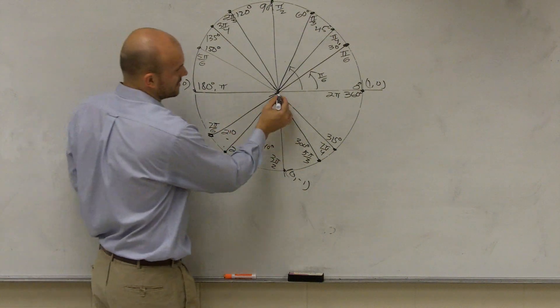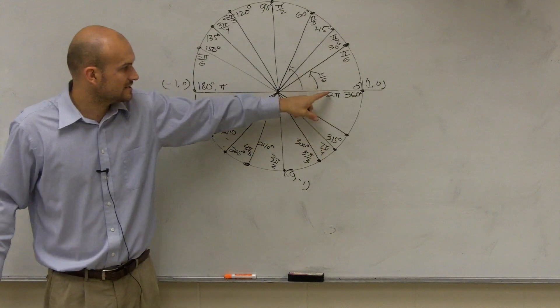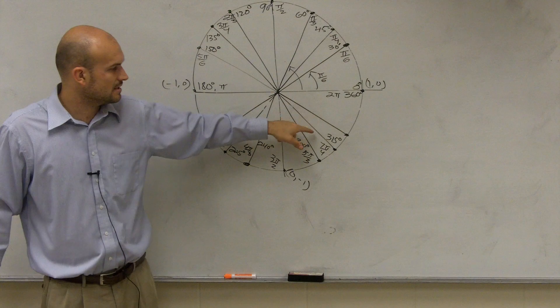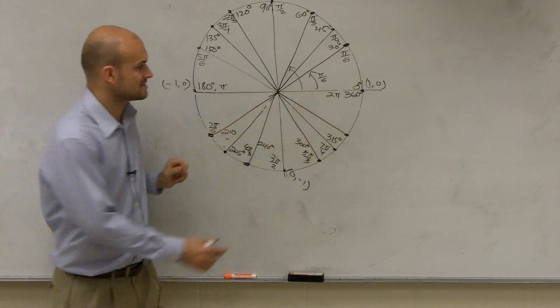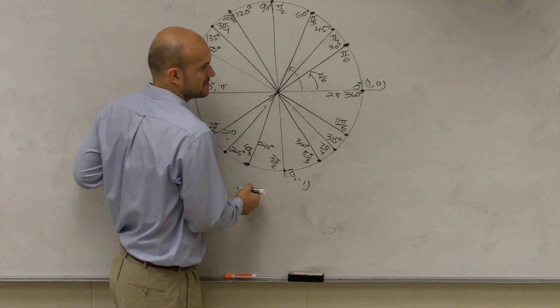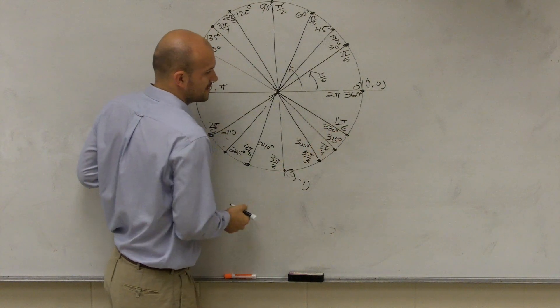And then the last one is going to be right there, which is, all the way around is 2 pi or 12 pi over 6. So then this angle is going to be 11 pi over 6, which is 30 degrees less than 360, which is 330 degrees.